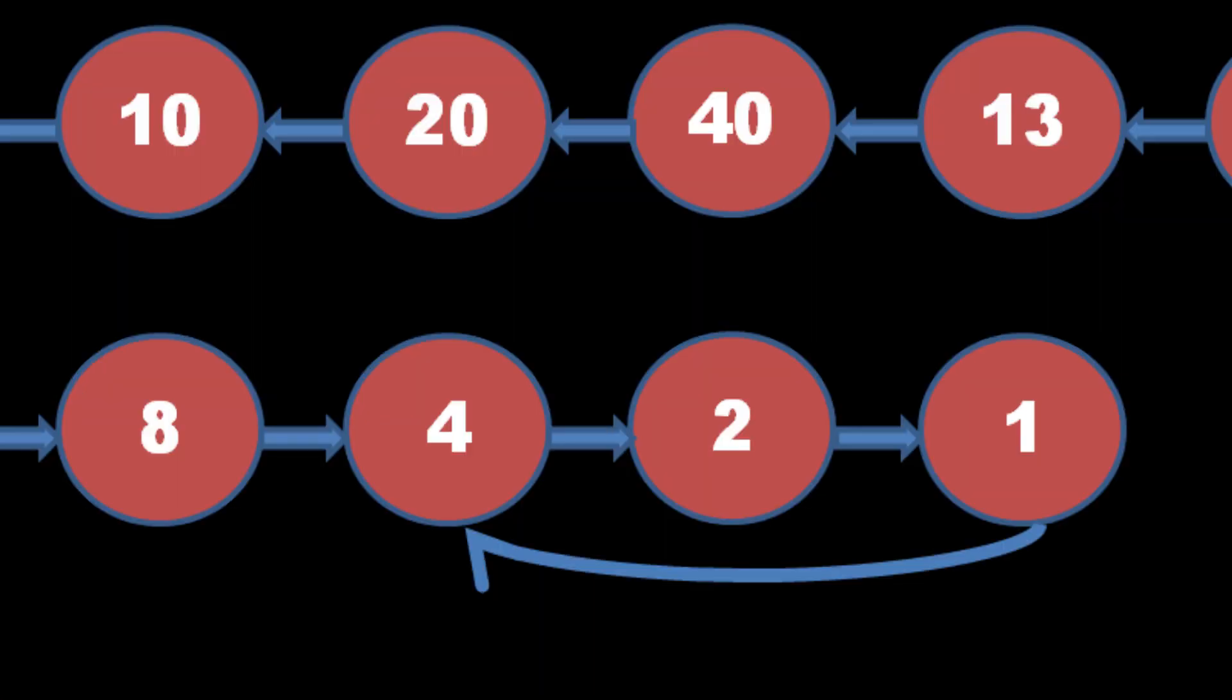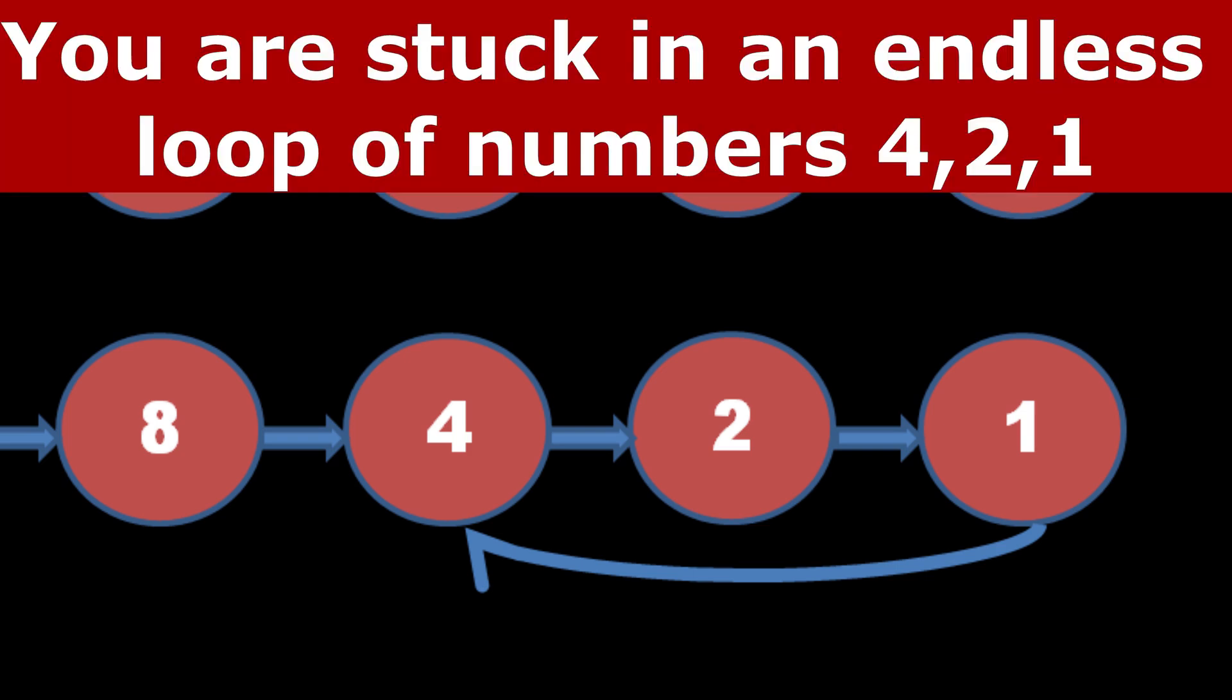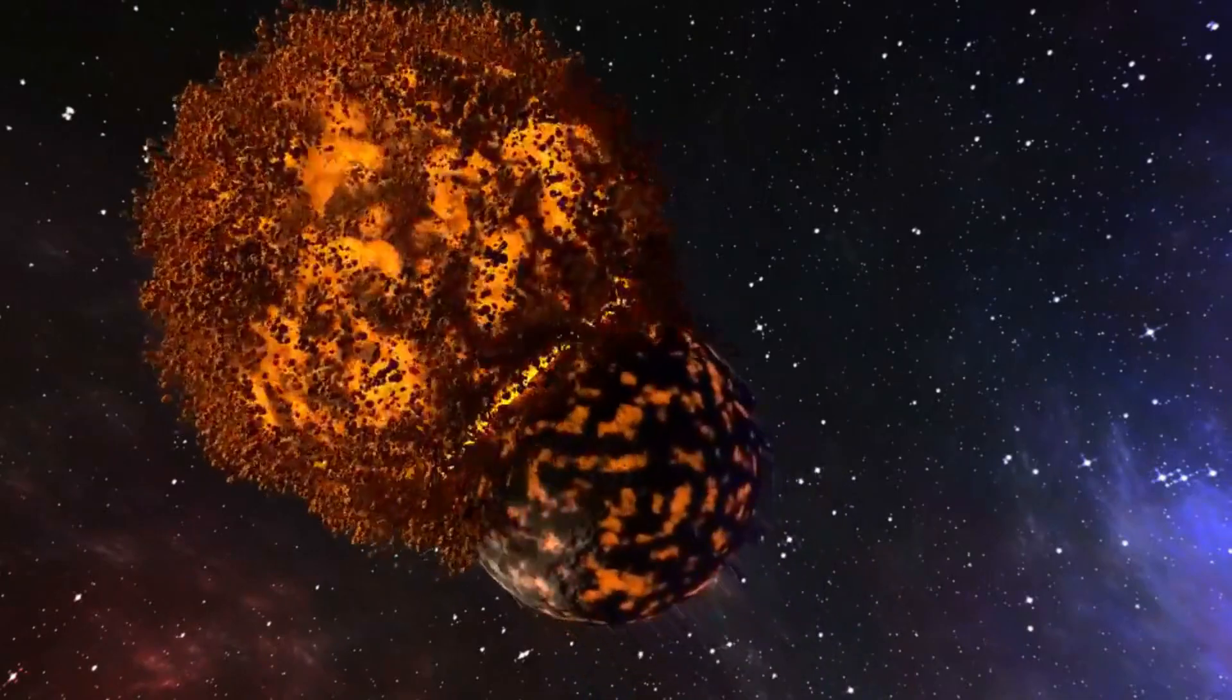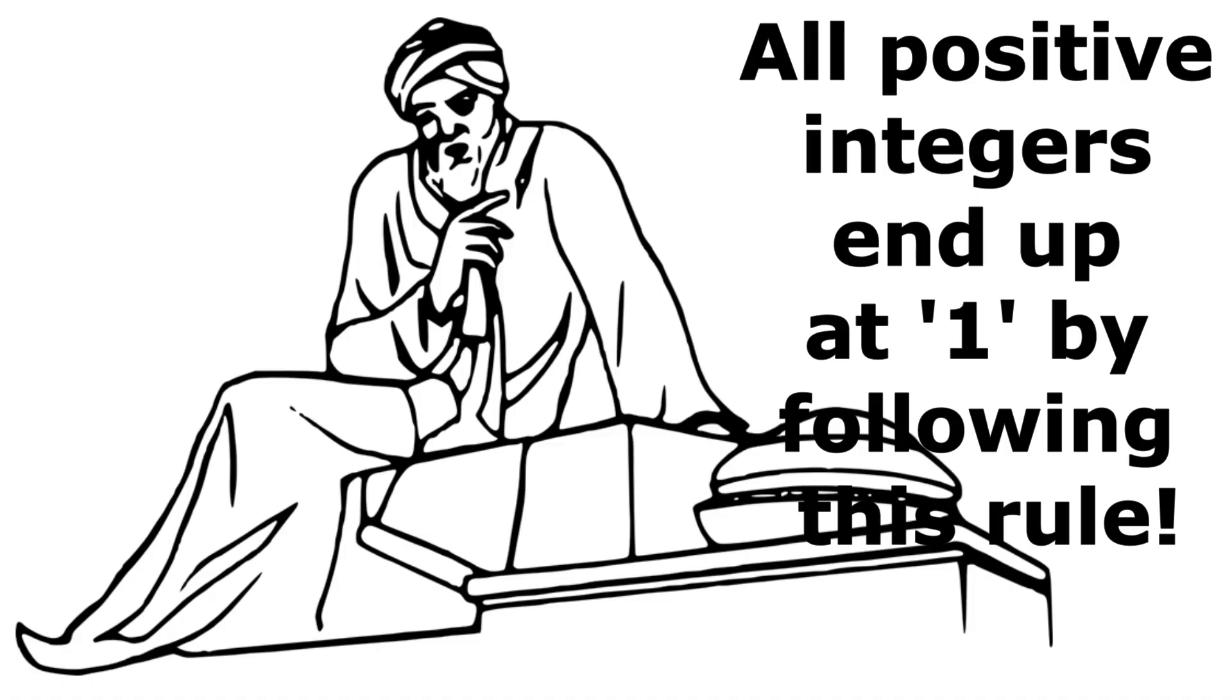Since 4 is even, you divide it by 2 and get 2. Again, 2 is even, so you divide it by 2 and get 1 once again. Did you observe something weird? You are stuck in an endless loop of numbers 4, 2 and 1. This is what the Collatz conjecture states. All positive integers end up at 1 by following this rule.